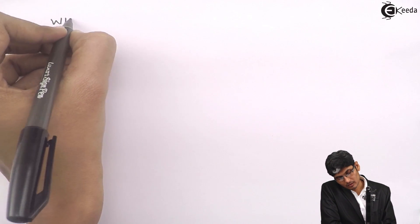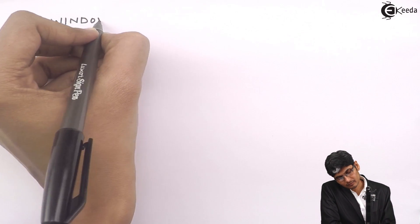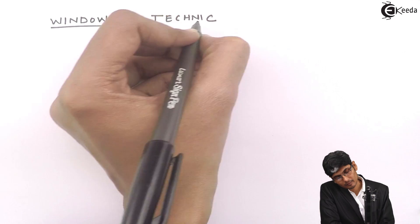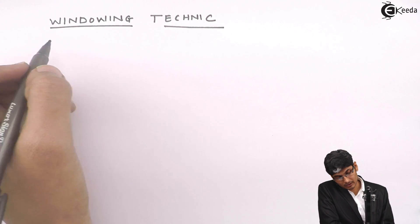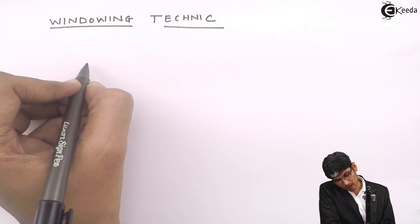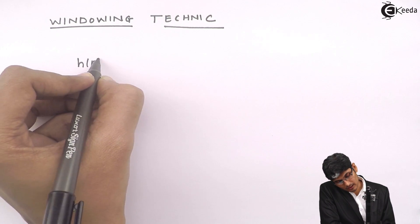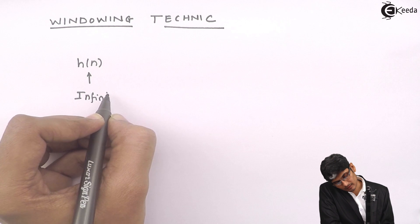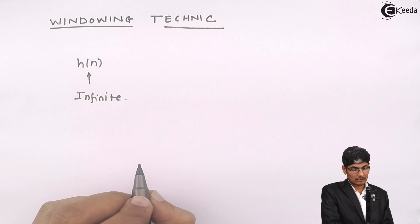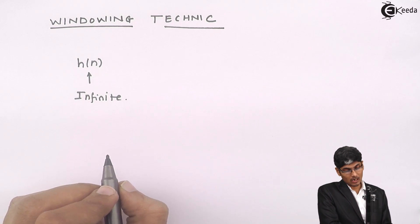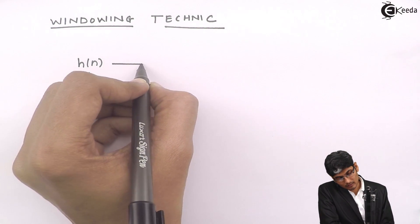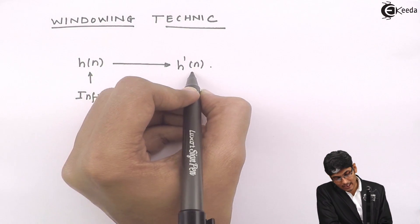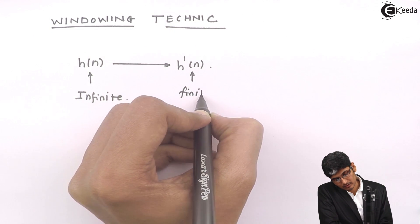The windowing technique actually deals with, let's say that I have an h of n which is infinite in length. There are infinite total samples in h of n and onto this, I will apply this technique to get h dash of n, which will have finite samples.